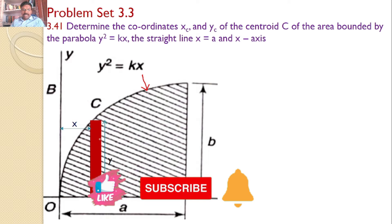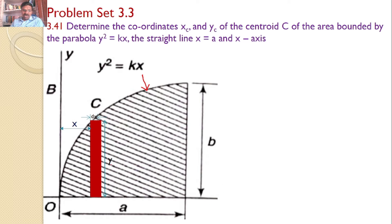The height of the strip is y and the width is dx. The height y is not constant — it depends on x — and x and y are related by y² = kx. The centroid of this small strip is at its center, with coordinates x_g (x-coordinate) and y_g (y-coordinate).